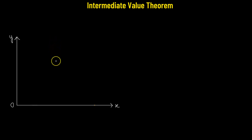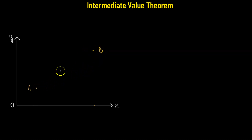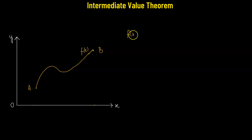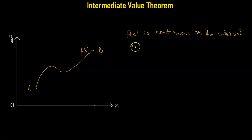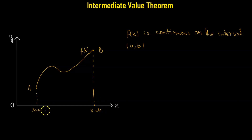Let's discuss the intermediate value theorem. For this, we will begin by considering two points, point A and point B on the xy plane. So let's join point A and B with the help of a very smooth graph. This curve is the function f of x. So f of x being a smooth function, we'll say f of x is continuous on the interval A, B, where this is the point x equals to A and this is x equals to B. So within the interval A and B, f of x is a continuous function.